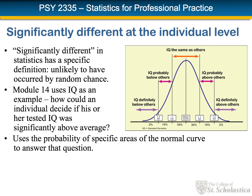Module 14 looks at the IQ of an individual and asks how could the individual decide if his or her tested IQ was significantly above average, using the probability of specific areas of the normal curve. The picture illustrates a range of values where we'd say the IQ is in the same range as the general population, two areas where it might be higher or lower, and areas out in the tails — small degree of frequency — where we would say the IQ was definitely above or definitely below average.